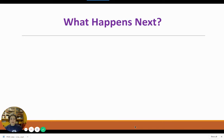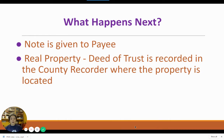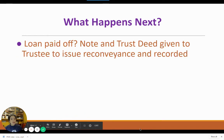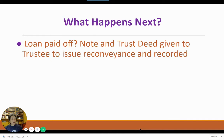Once the note is signed, it is given to the payee or the lender for safekeeping. If there was a deed of trust, that document is also signed, but it has to be notarized and then recorded at the county recorder's office where the property is located. If this is a note secured on business fixtures and equipment, then the UCC financing statement gets filed at the Secretary of State's office.